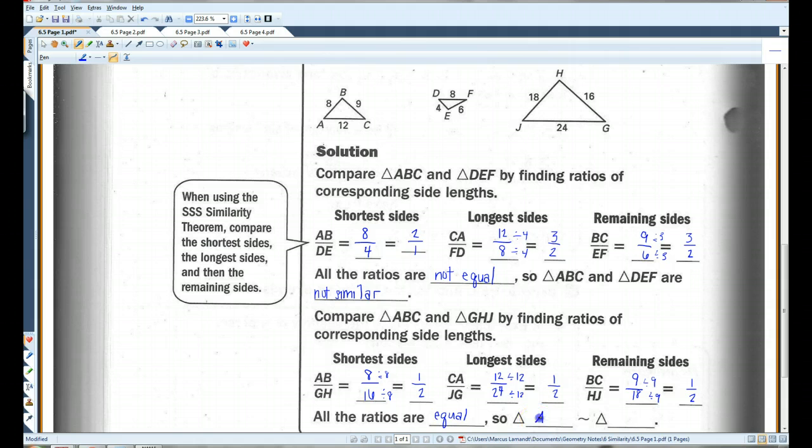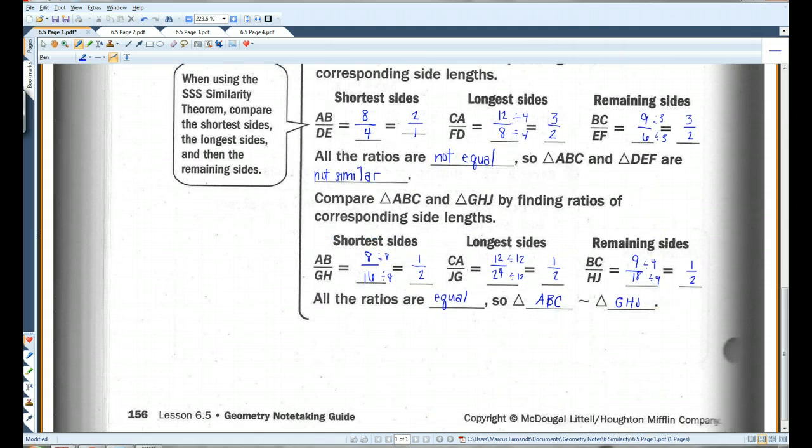So, triangle ABC is similar to triangle GHJ. Make sure you put the letters in the correct order. Alright, let's go on to page 2.